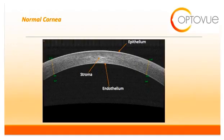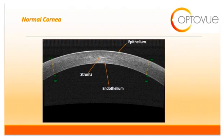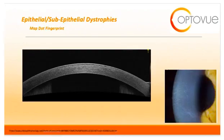This slide shows you what the normal cornea should look like on OCT. The most superficial surface is the epithelium, followed by the corneal stroma, with the most posterior feature being the corneal endothelium. The OCT can be extremely useful in identifying corneal dystrophies, as the OCT will delineate the layer of cornea involved.